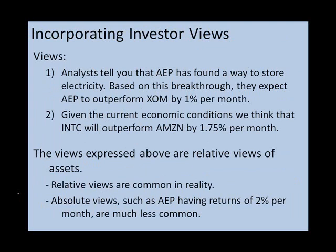Now let's turn to our example. We're using the five stocks we've used throughout the class: Intel, Amazon, AEP, ExxonMobil, and Merck. We have views about the expected returns for these stocks. We think AEP is going to outperform ExxonMobil by 1% per month, and Intel is going to outperform Amazon by 1.75% per month. These are relative views. An absolute view would be saying a single stock will return 2% per month, but in practice absolute views are fairly rare.